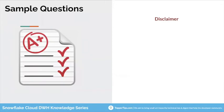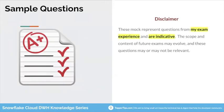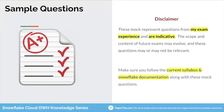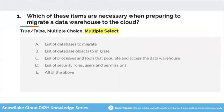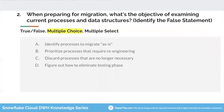Let's go through some sample questions. Disclaimer: these are just a mock representation from my exam experience. I recommend that you follow the current syllabus as well as the Snowflake documentation as it evolves over time. First question: which of these items are necessary when preparing to migrate a data warehouse to the cloud? It is a multiple select question. Second: when preparing for migration, what is the objective of examining the current processes and data structure? Identify the false statement. Please pause the screen and think through.